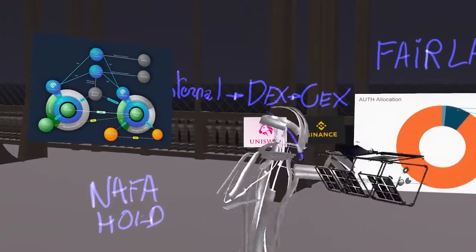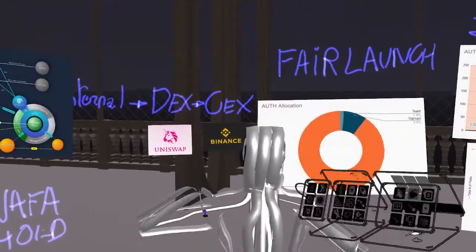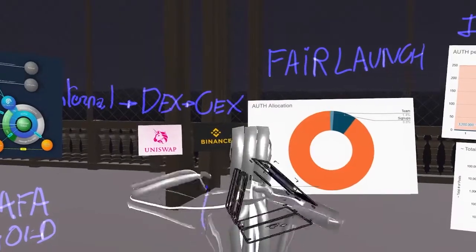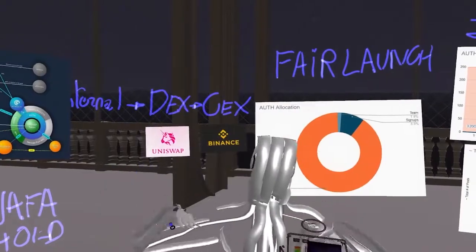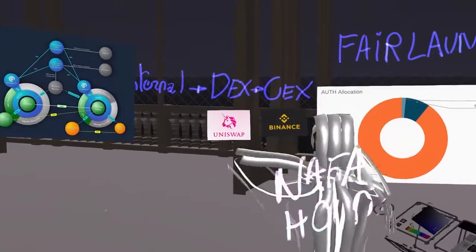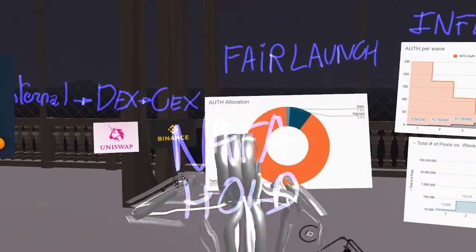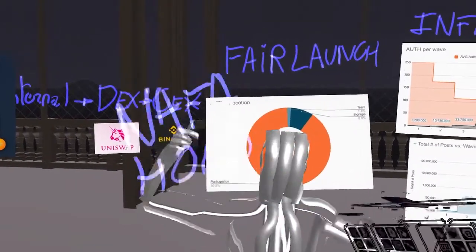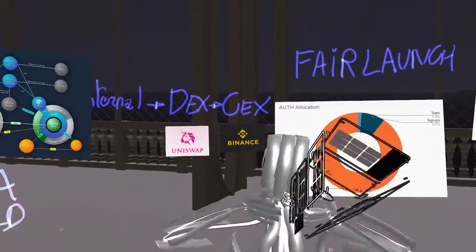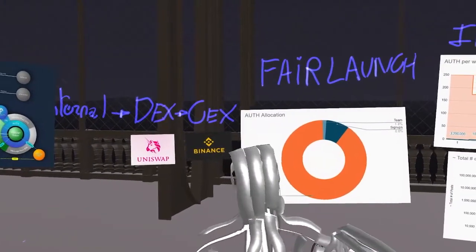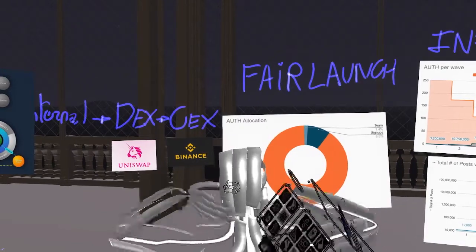In this video I'm going to deep dive into the tokenomics of Authenticity, explaining the auth token, the different elements, how it's mined, to answer the question: should I buy or should I mine auth token? Before we start, a little disclaimer: I am NOT a financial advisor and I do hold personally auth token in my wallet. With this out of the way, make sure that you back this video on Authenticity.io and that you follow me for more videos about Authenticity and the metaverse.